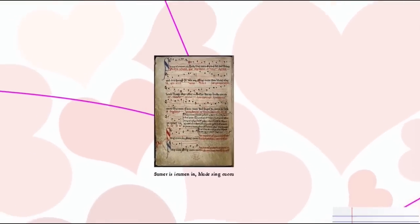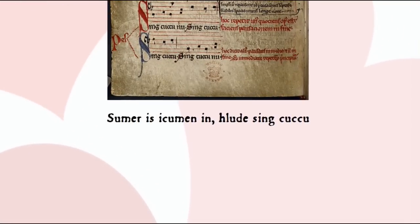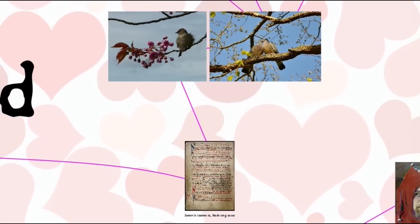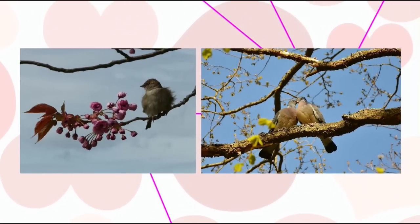But returning to the cuckoo for a moment, the word is first attested in English in the famous 13th century Middle English cuckoo song, which begins: 'Sumer iz i kumen in, hlu de sing cuckoo.' Summer here probably refers to spring, actually, with the plants starting to grow again and the animals mating. The word spring isn't attested until a little later, though there were a variety of other terms that could be used to refer to the season. Bird song is naturally enough associated with the arrival of spring.